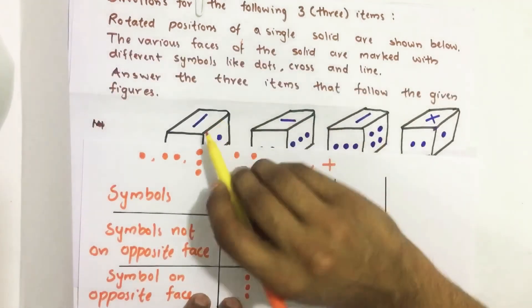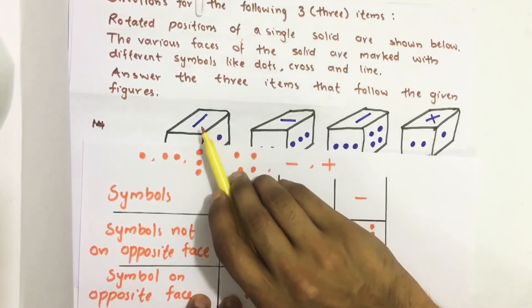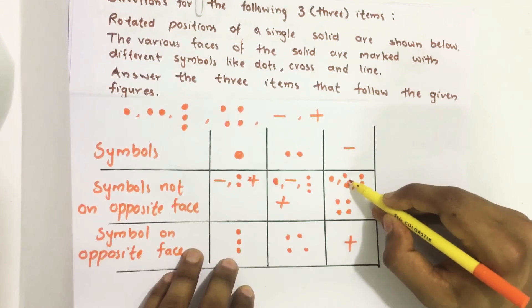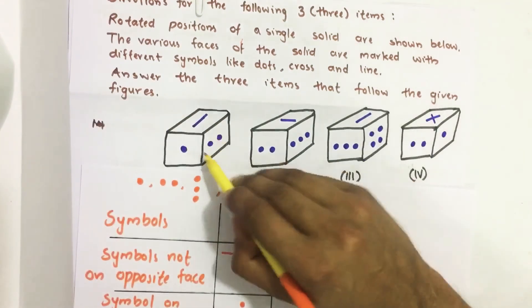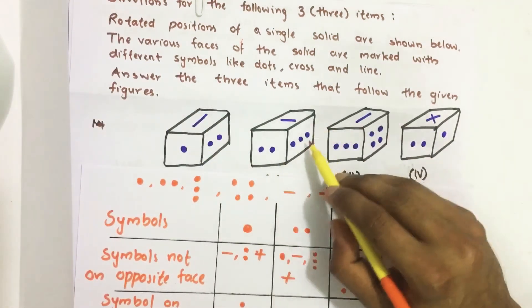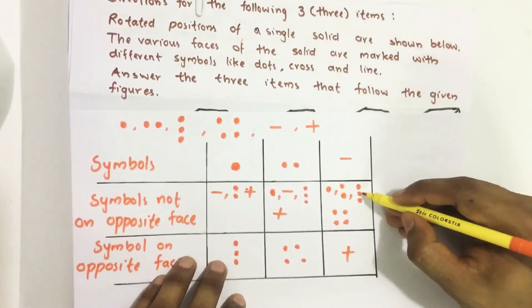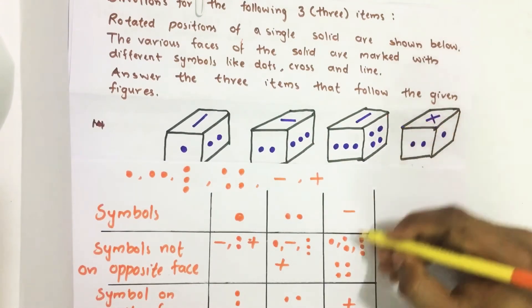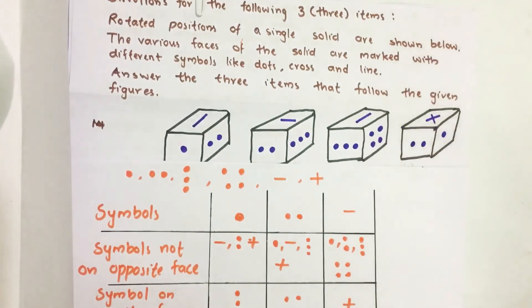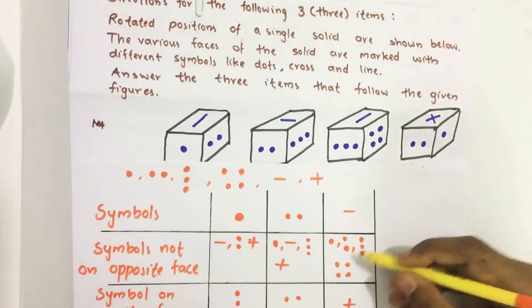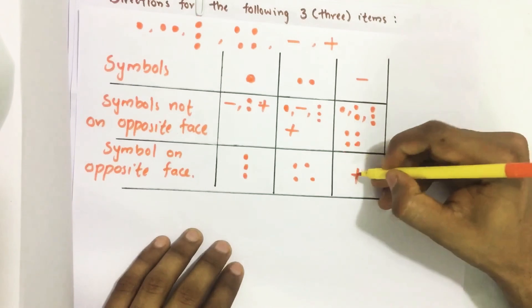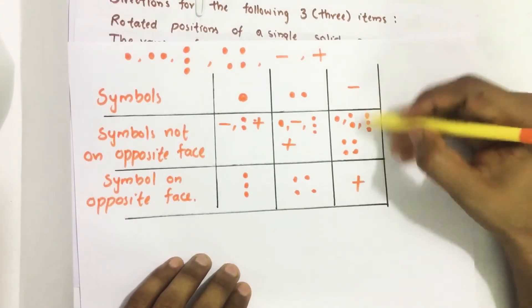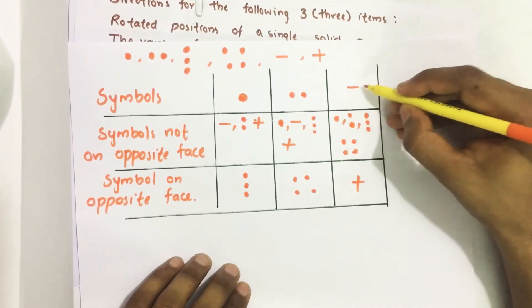Then next consider the line. From the first figure, single dot and double dot are not on the opposite face. Because it is on the adjacent face. From the second figure, triple dot also on the adjacent face. From the third figure, four dot also on the adjacent face. So the remaining cross mark is on the opposite face. So opposite to the cross it is line.